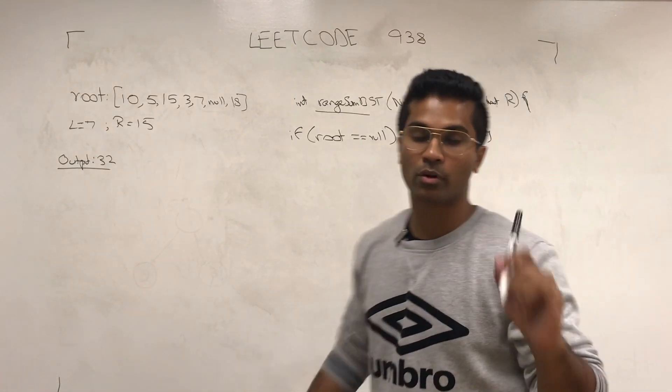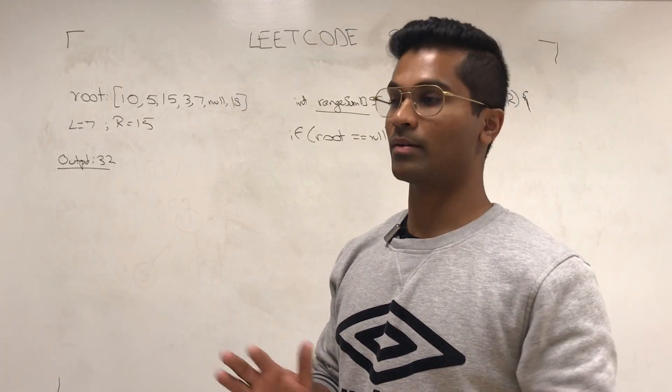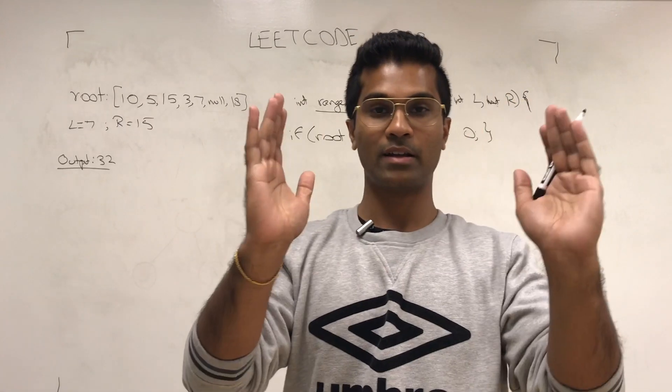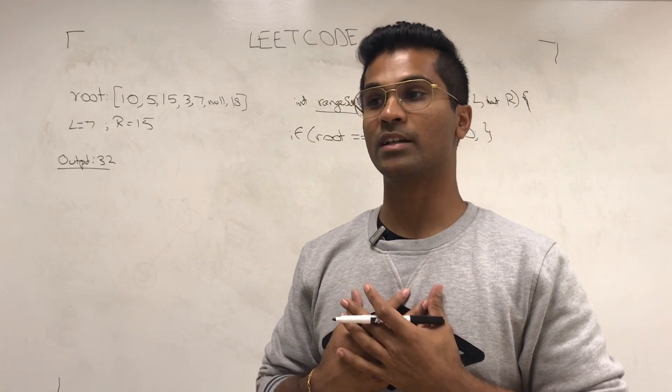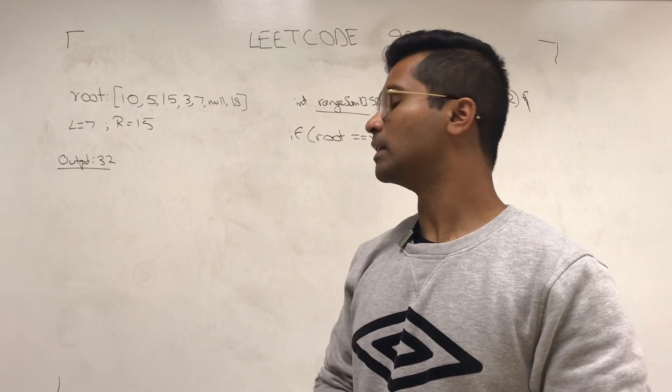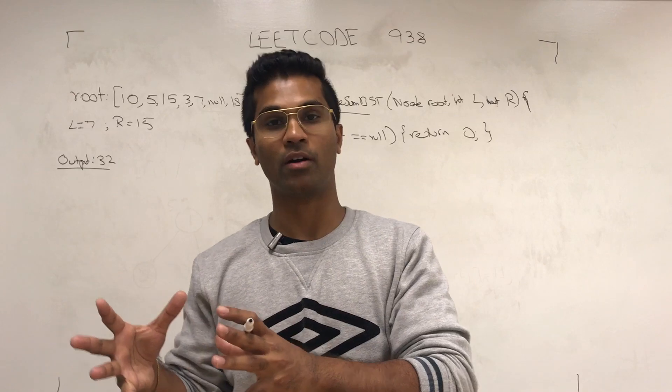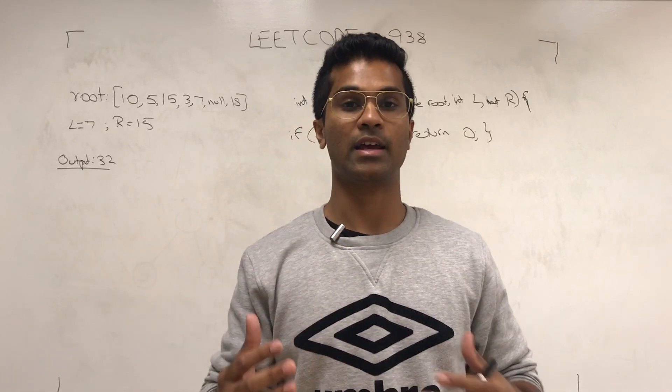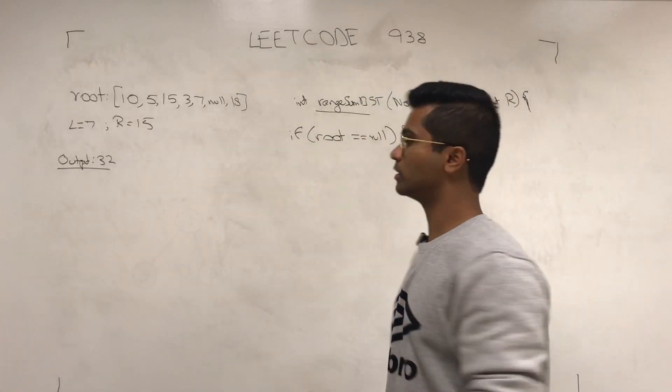Now the trick to this problem is this. If we're asking a node and its value is outside of the range of L and R, if it's less than L, the node is going to say, hey, don't ask me, ask my right child, because my right child might be within the range. And if the root's value is on the right side of R, if it's greater than R, then he's going to say, hey, don't ask me, ask my left child, because my left child might be within your required range.